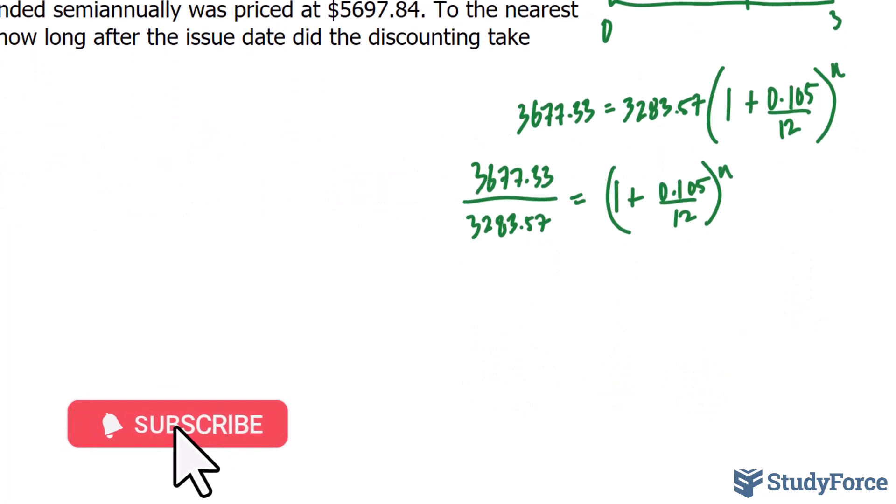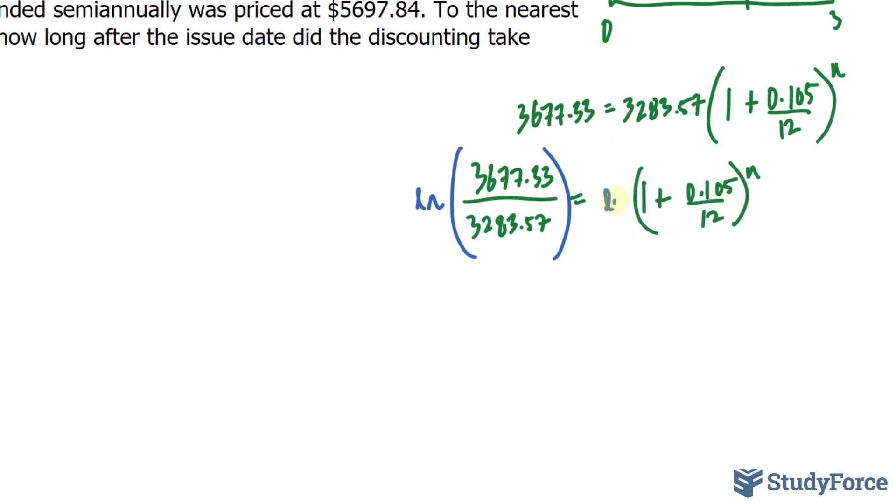And then, we take the natural log of both sides. So, I'll write down ln on both sides of the equation. And what this will do is it will change the right side so that we have n times the natural log of 1 plus 0.105 divided by 12. And the left side remains the exact same way.